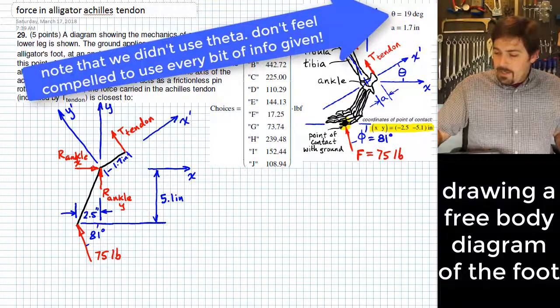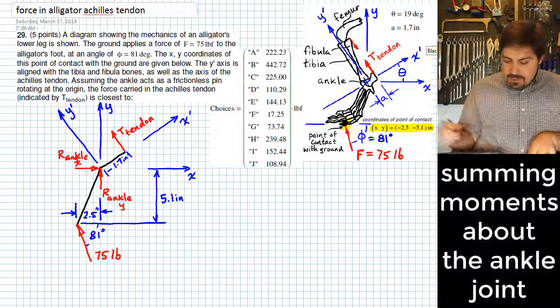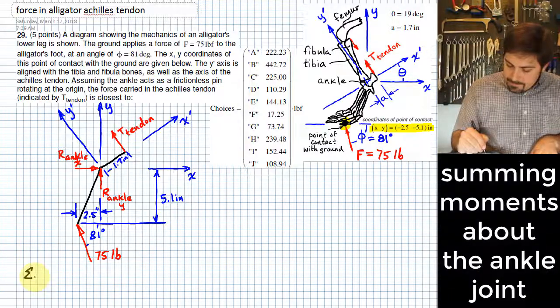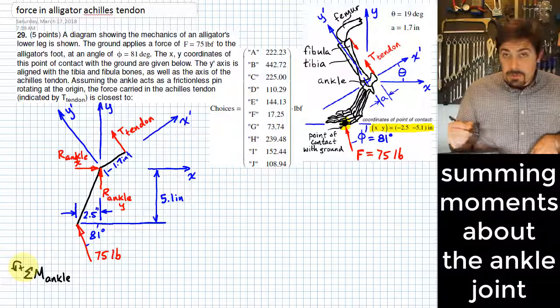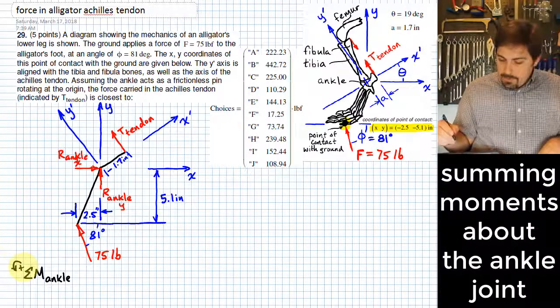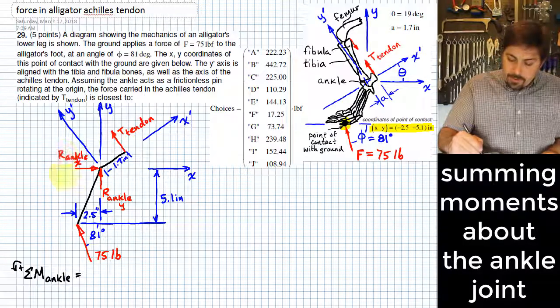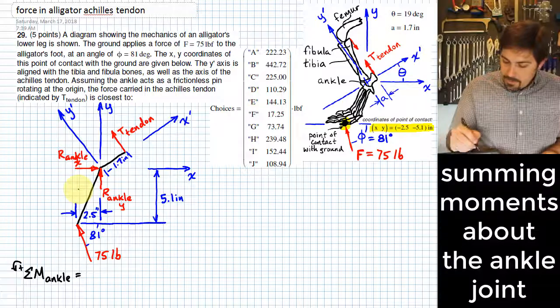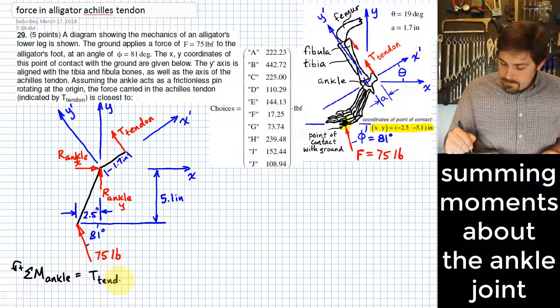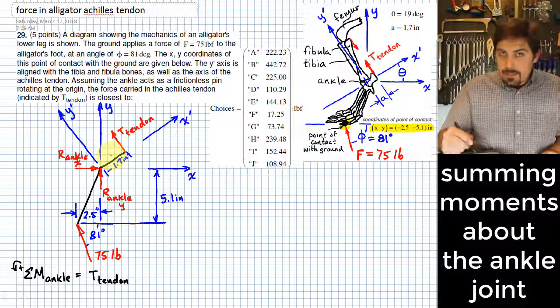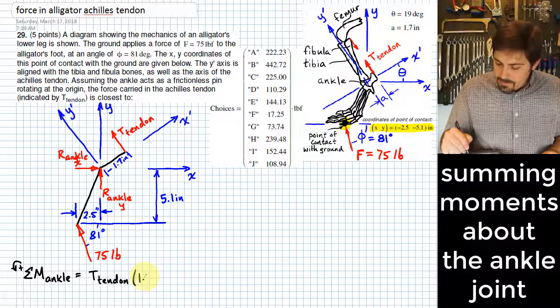So as always with your free body diagram, what you do is you write equilibrium equations. We're going to sum moments around the ankle, and we'll take counterclockwise to be positive. Here we've got the amount of force in the tendon. That tends to create a counterclockwise rotation around the ankle, which we are counting as positive. So I'll take T-sub-tendon, and its length from its line of action to the ankle is just 1.7 inches.